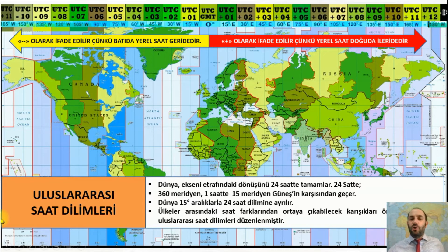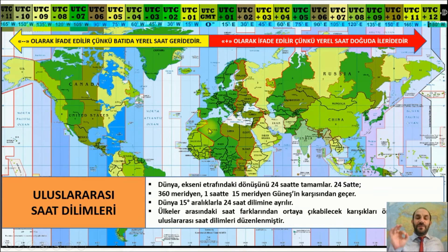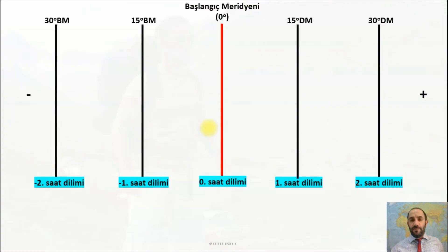Doğuya doğru genelde artı, batıya doğru eksi olarak ifade edilir. 0 derece Greenwich'in aynı zamanda 24. saat dilimi olduğunu unutmayalım.